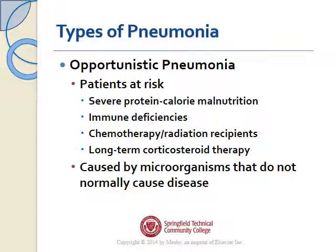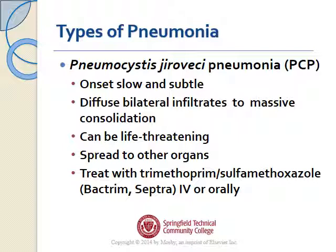You can also have an opportunistic pneumonia, which affects patients specifically at risk, including those with severe malnutrition, immune deficiencies, chemotherapy or radiation, and patients on long-term corticosteroids. These are patients at risk for pneumonia that wouldn't cause issues in a healthy person. One good example is Pneumocystis jirovecii pneumonia — formerly called Pneumocystis carinii pneumonia. The onset is slow and subtle, it can cause a significant-appearing pneumonia, can be life-threatening, can spread to other organs by hematogenous spread, and is treated with Bactrim IV or orally.